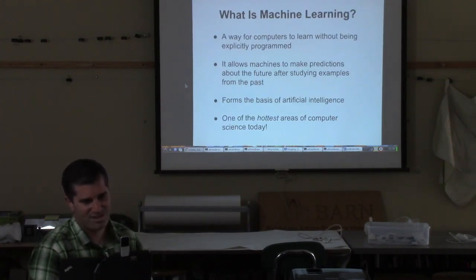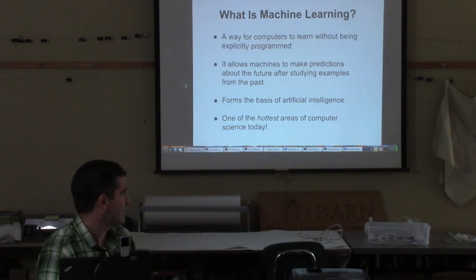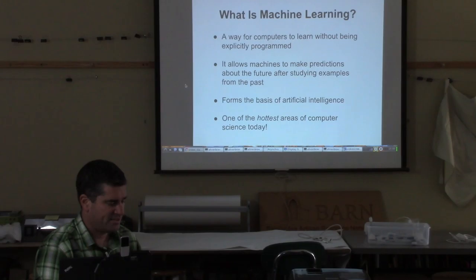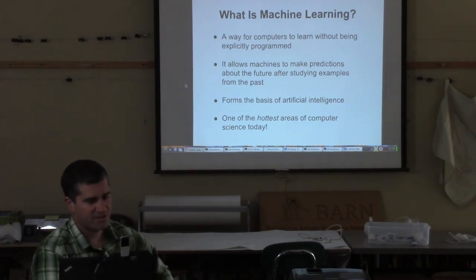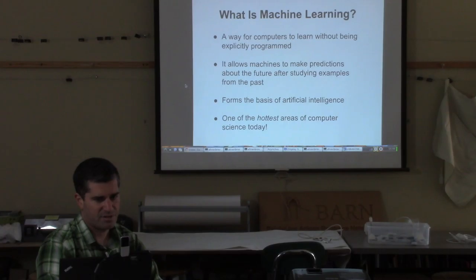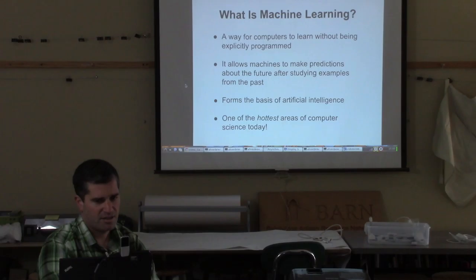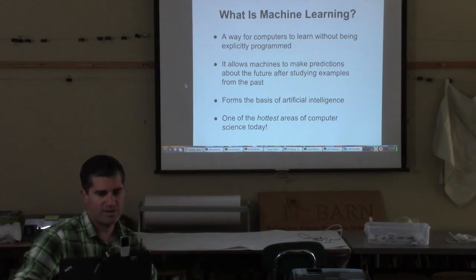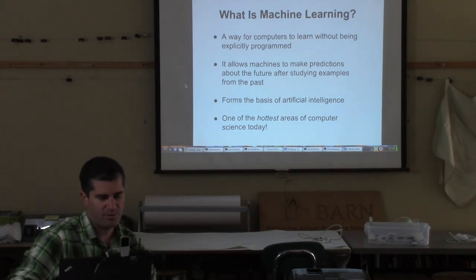What is machine learning? Machine learning is a way for computers to learn things without actually being programmed. It allows them to predict the future, to make decisions, to classify things into categories after studying examples that humans provide them. Machine learning is really the basis of artificial intelligence and one of the hottest areas of computer science today, with a ton of work going into it and people making really interesting discoveries all the time.